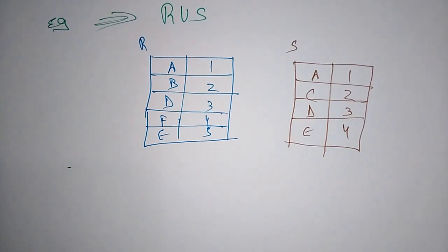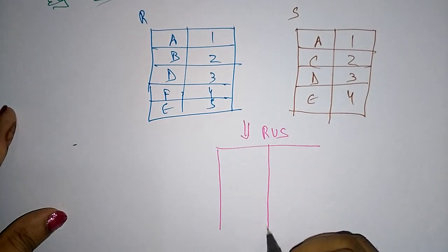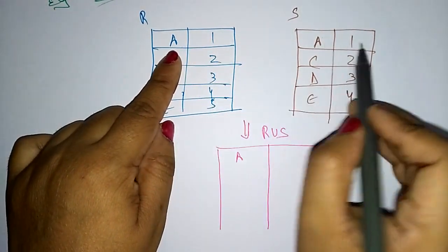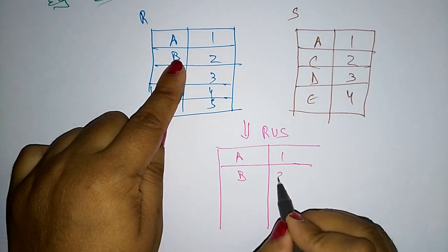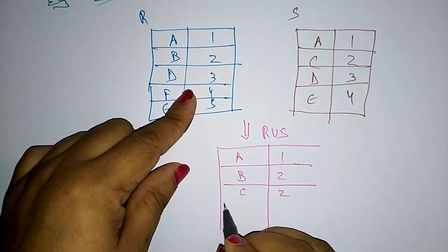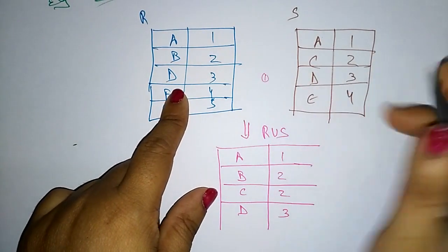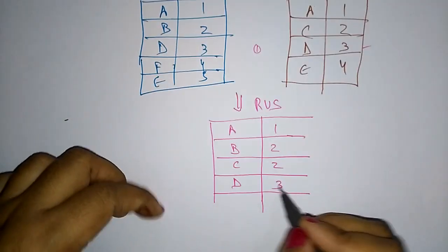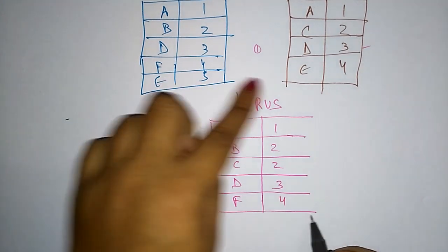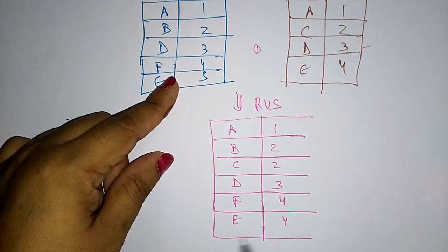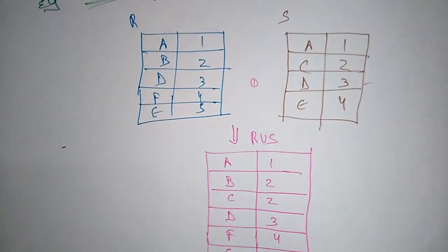When combining the two tables we eliminate duplicates. For R union S: A1 appears in both tables so we take only one A1. B2 is from R and C2 is from S. D3 appears in both so we keep only one D3, eliminating the duplicate. Then F4, E4, and E5 are included. This is the output for R union S.